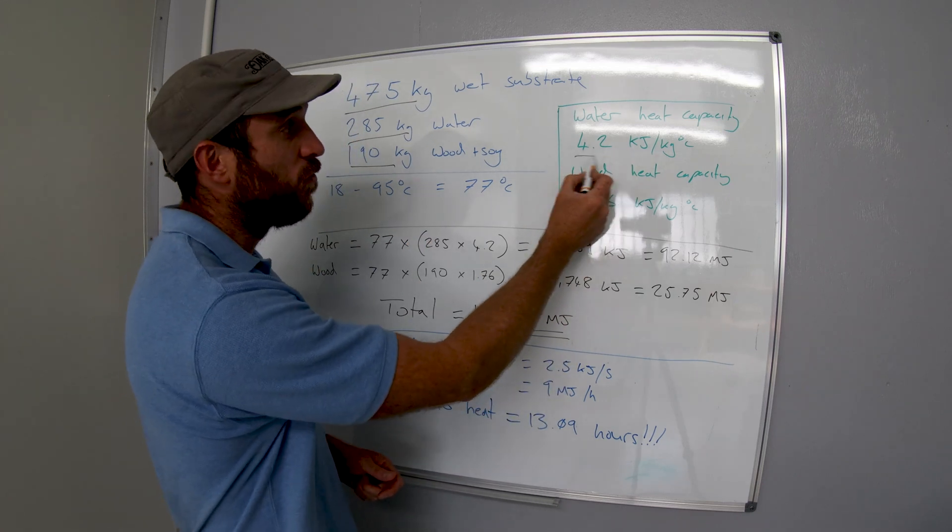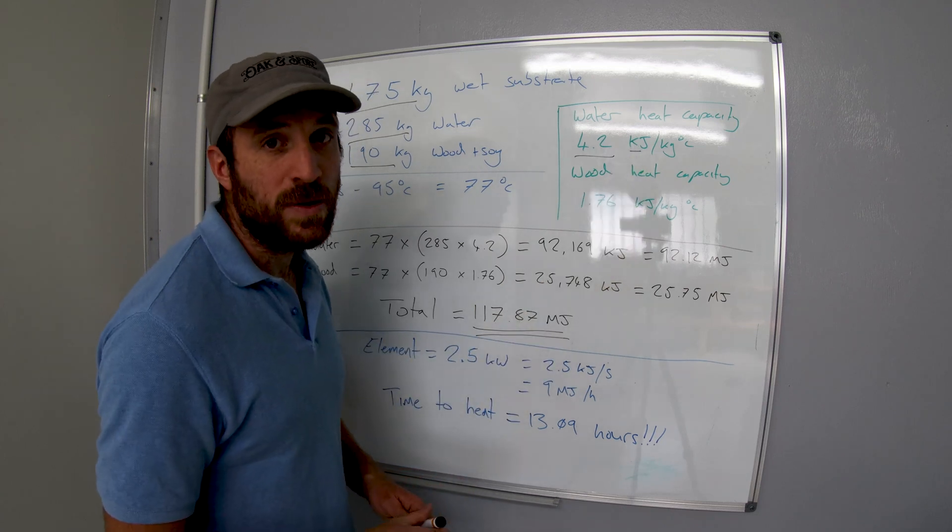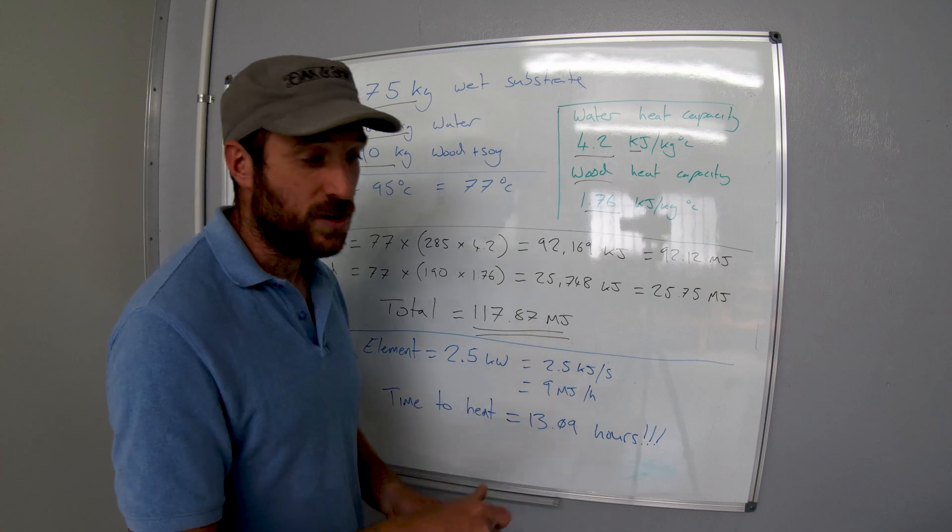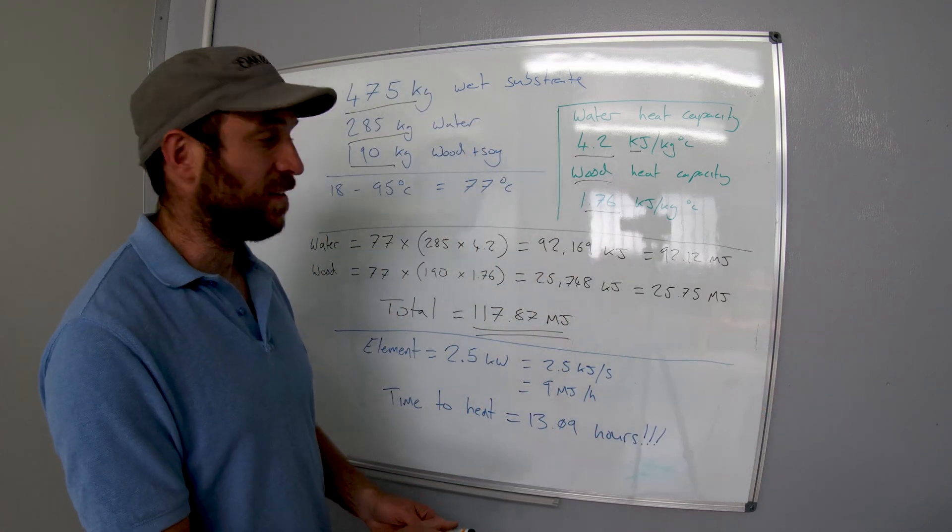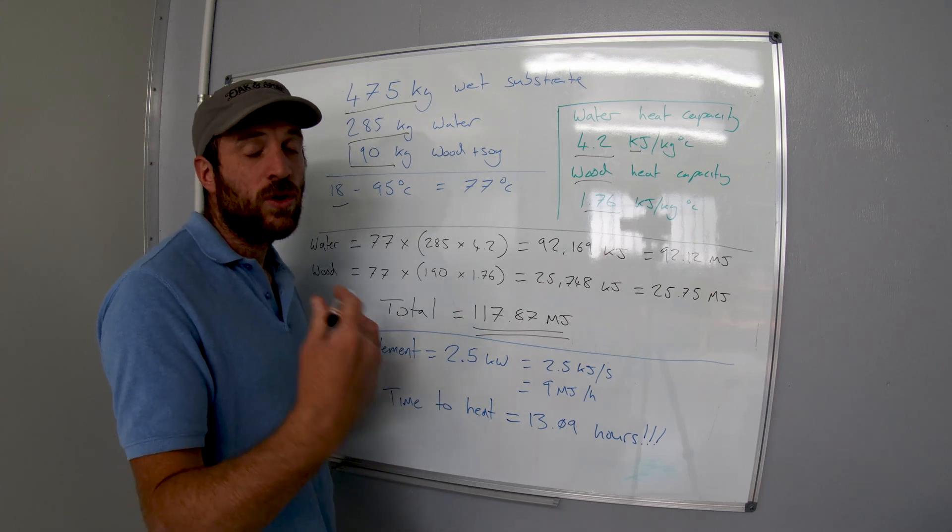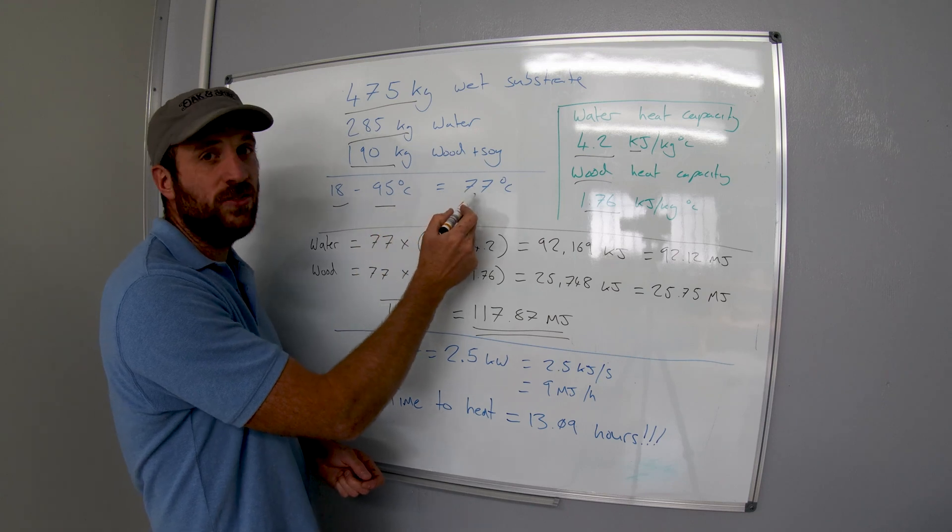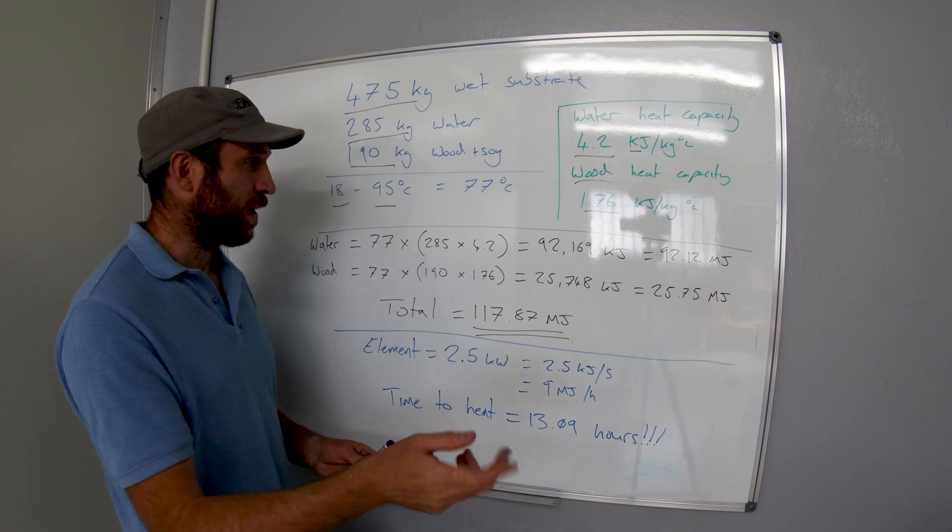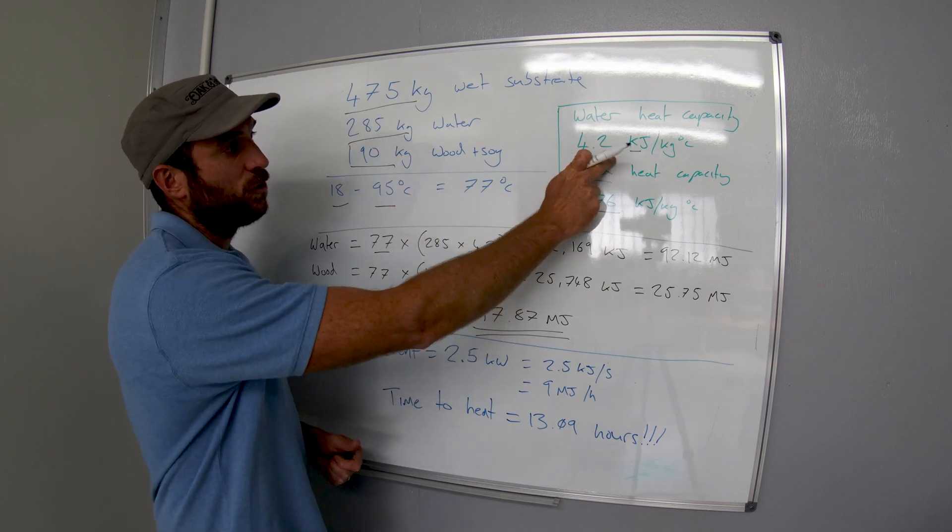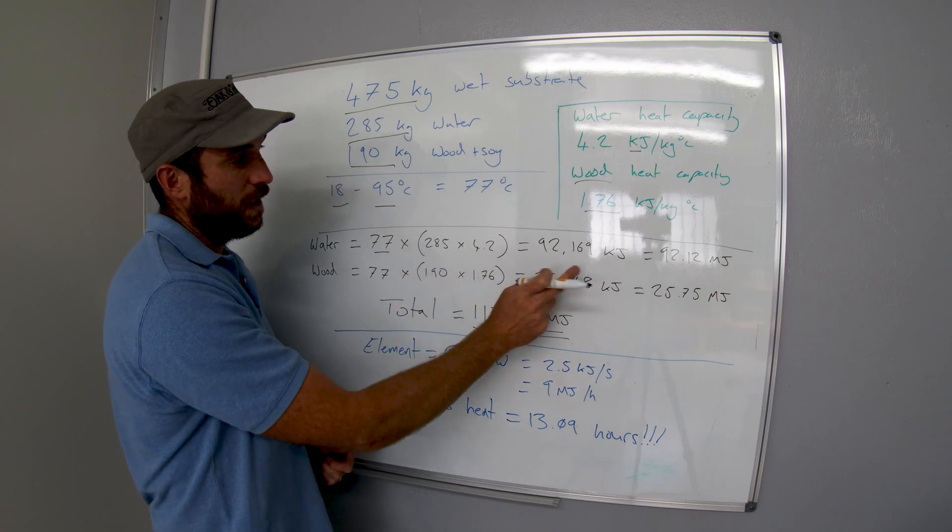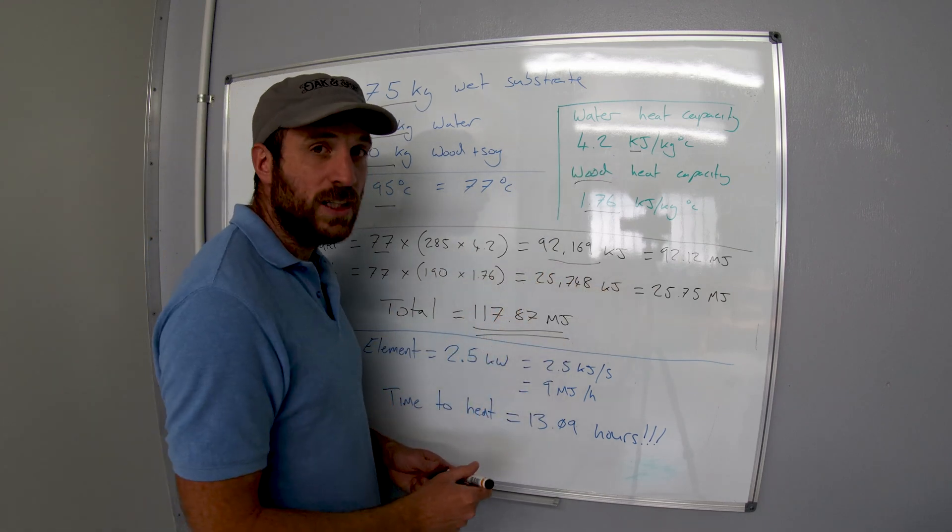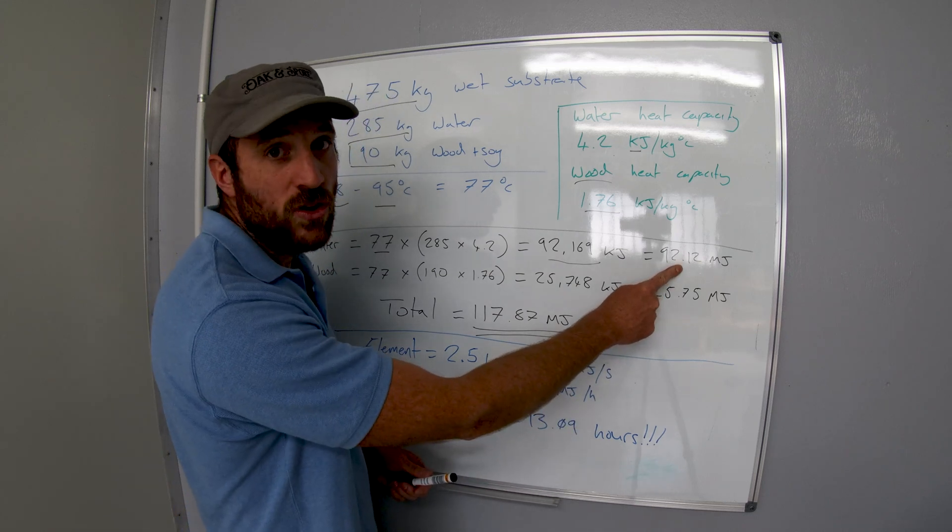The heat capacity of water is 4.2 kilojoules per kilogram degree and wood heat capacity is 1.76 kilojoules per kg degree. We need to shift our substrate from 18 degrees, it's quite hot here today, to 95 degrees. That's a shift of 77 degrees. So we can figure out how much joules we need in there by going 77 times the weight times the kilojoules per kilogram degree and it equals our answer.